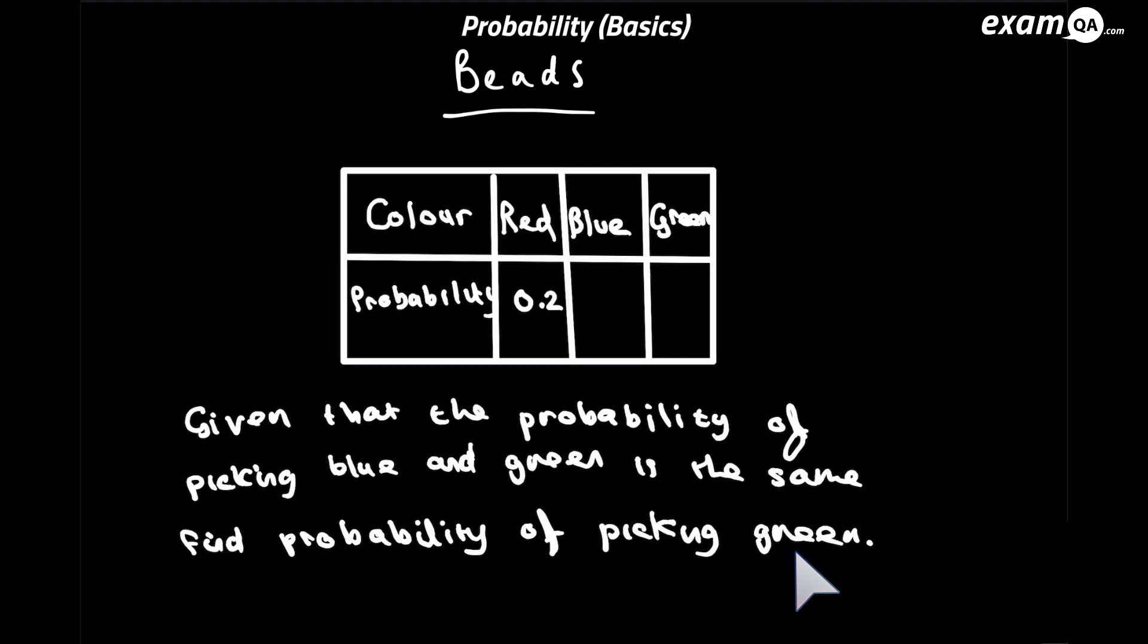So we'll do 1 minus 0.2 to see how much is left. So here we can see there's 0.8 remaining. So these remaining two boxes must add up to 0.8, because that will allow all of them to add up to 1.